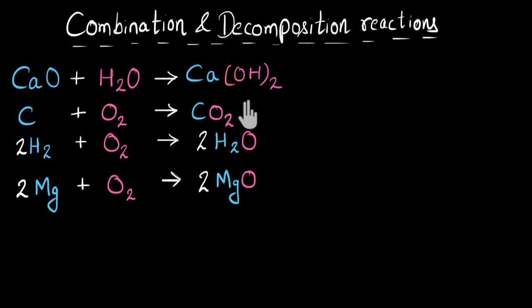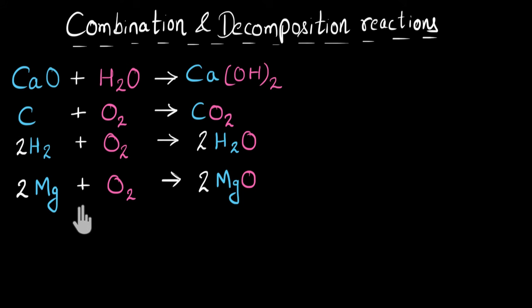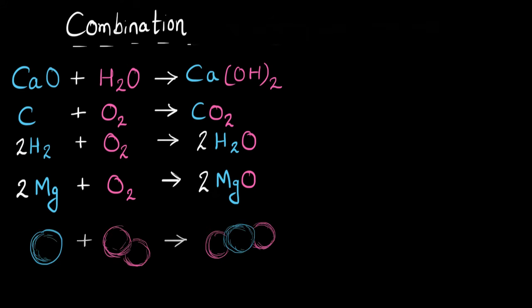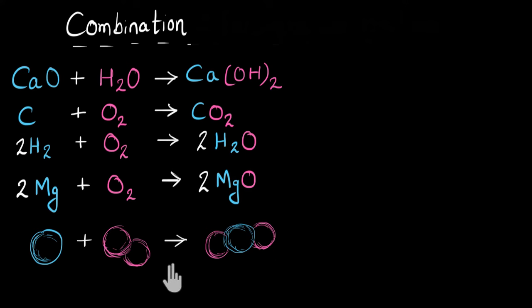In every example, the reactants are combining to give one single product. Here also, two reactants are combining to give one single product — everywhere the same thing is happening. So these are examples of combination reaction. At a molecular level, the atoms and molecules of the reactants are combining to give one single molecule, one single product. In combination reaction, multiple reactants combine together to form one single product.